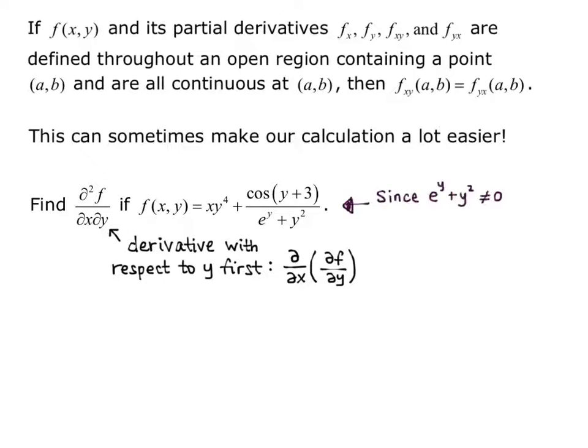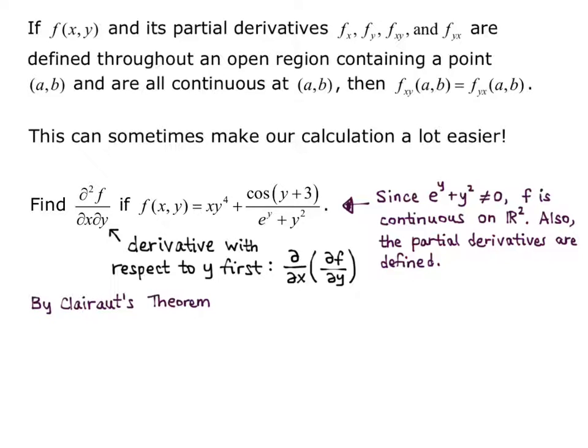Since e^y + y² is never equal to zero, and that's our denominator, and of course we cannot divide by zero, since that's never equal zero, f is continuous on all of R². So all ordered pairs (x,y), our function is continuous. Also, the partial derivatives are defined, and so by Clairaut's theorem, we can switch the order of derivation.